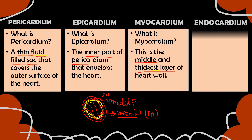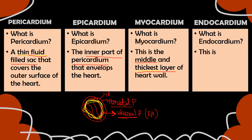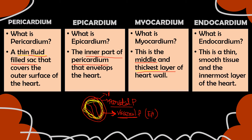And endocardium — what is endocardium? This is a thin, smooth tissue and the innermost layer of the heart. Here you have the chambers, and this layer is made up of endocardium. Take note: it is thin and smooth tissue. In pericardium we saw a thin, fluid-filled sac, but endocardium is thin as well — however, it is smooth tissue and the innermost layer of the heart.